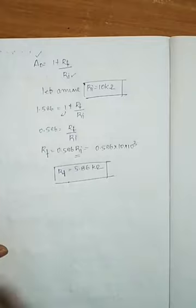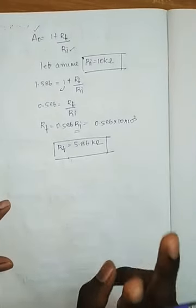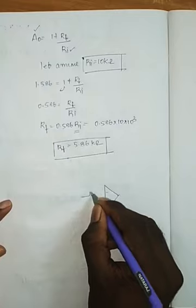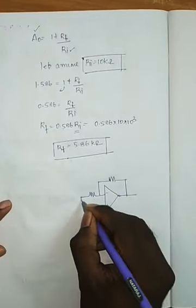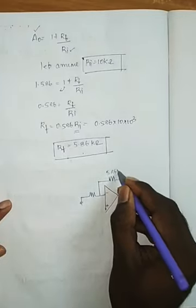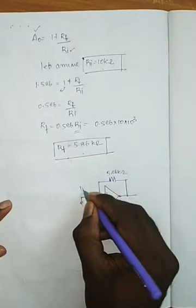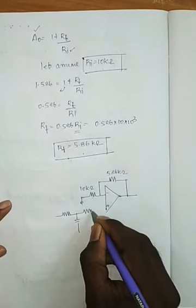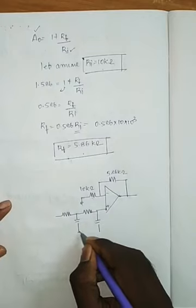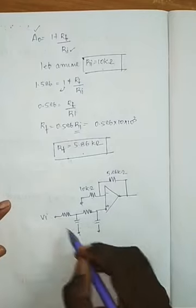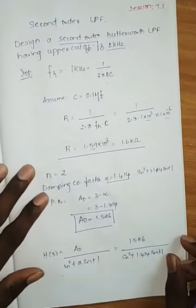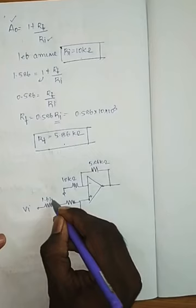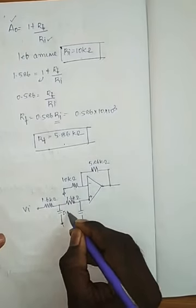With these values, we draw the circuit diagram. For a second order filter, we have two RC section pairs. The feedback connection uses RF equal to 5.86 kilohms and RI equal to 10 kilohms. On the input side, we have the first RC pair and the second RC pair, with input Vi. Both resistors R equal 1.6 kilohms and both capacitors C equal 0.1 microfarad.